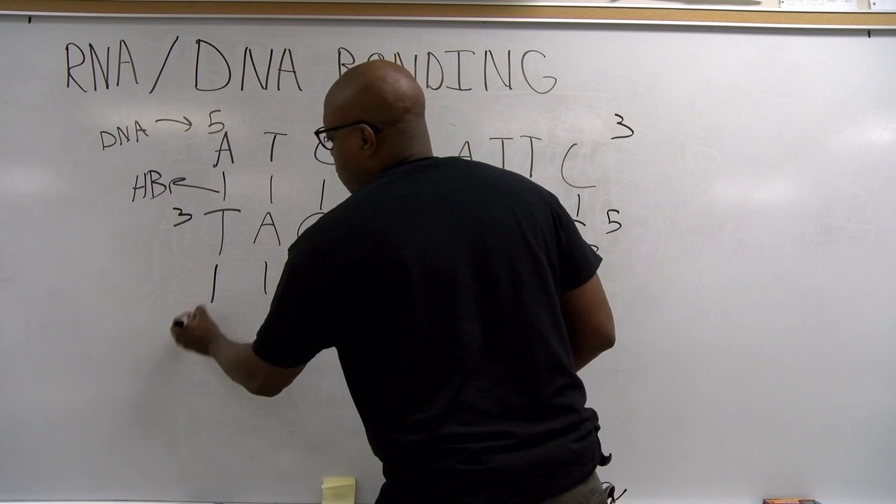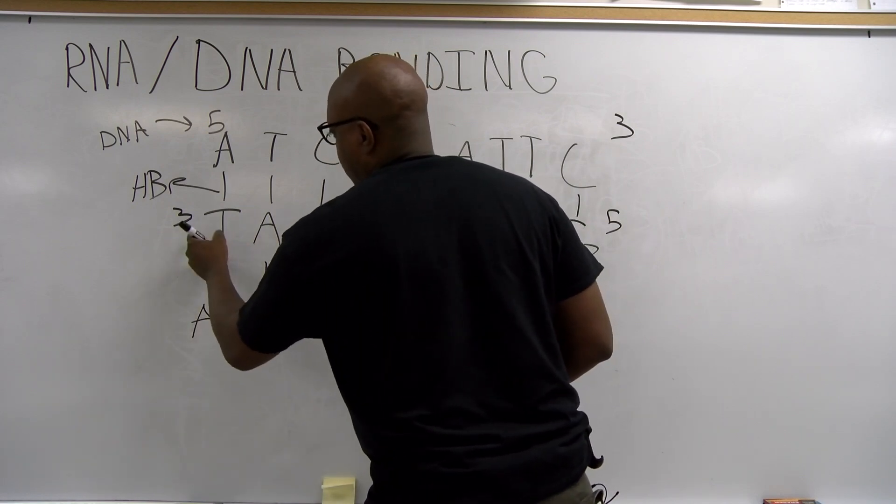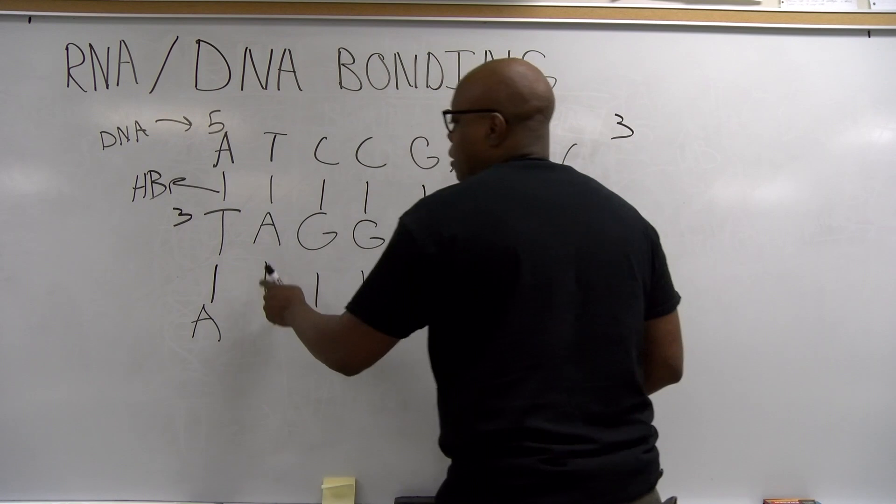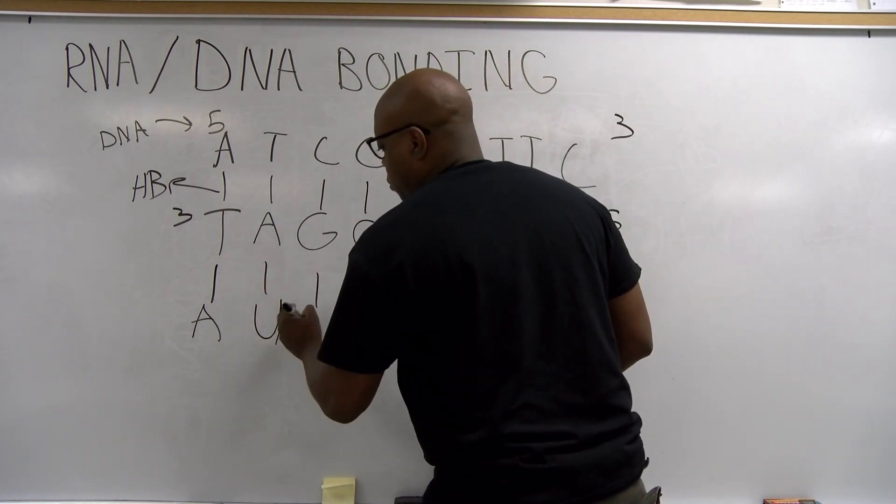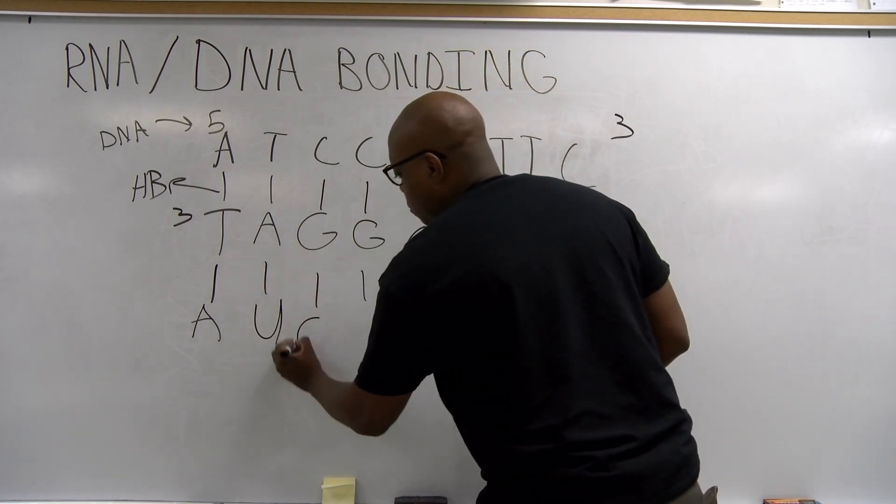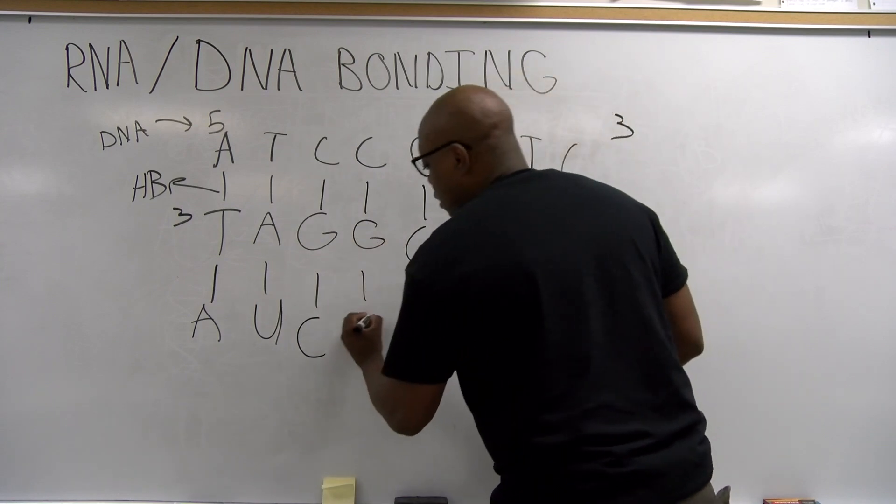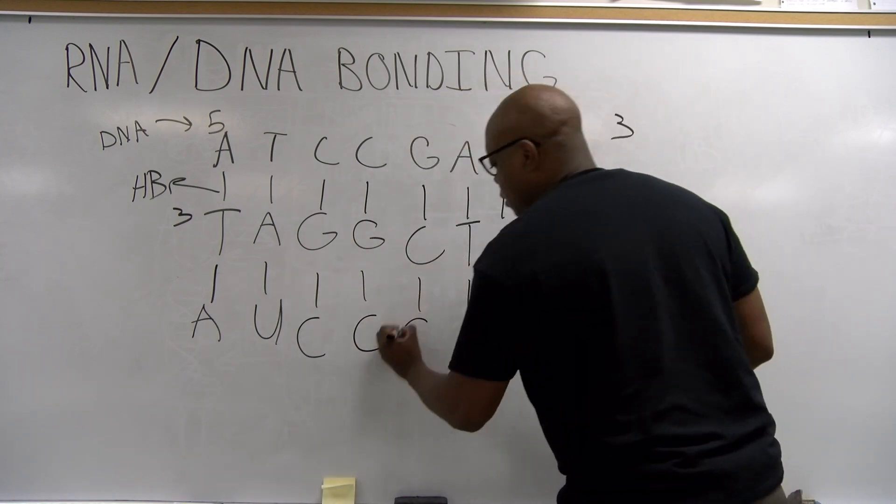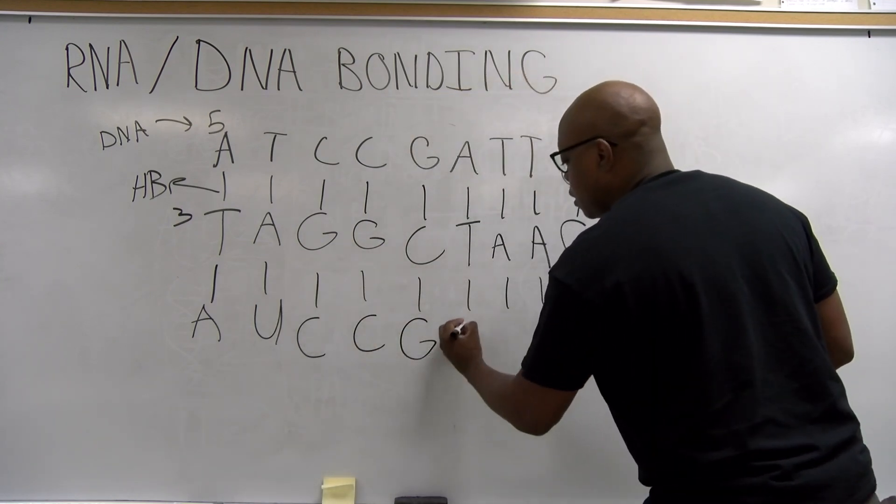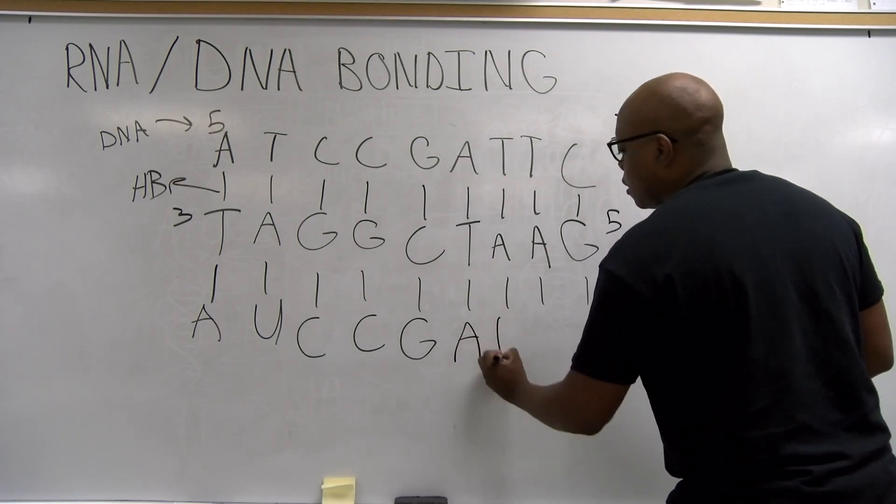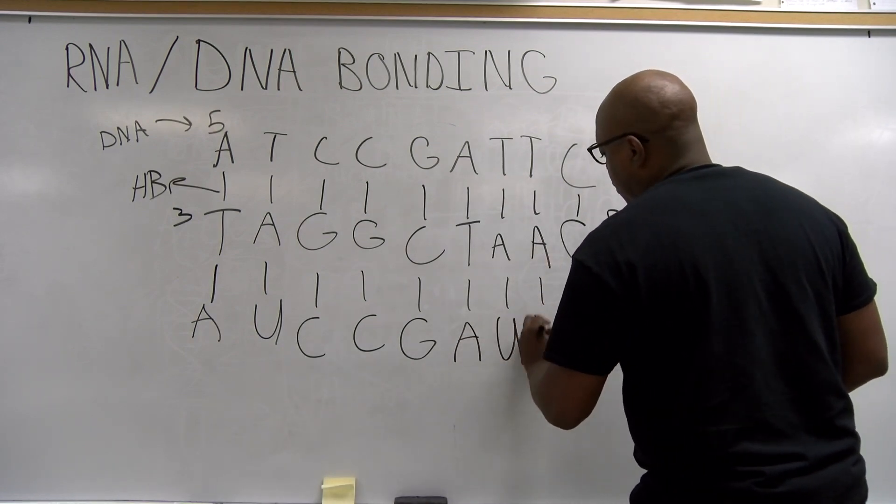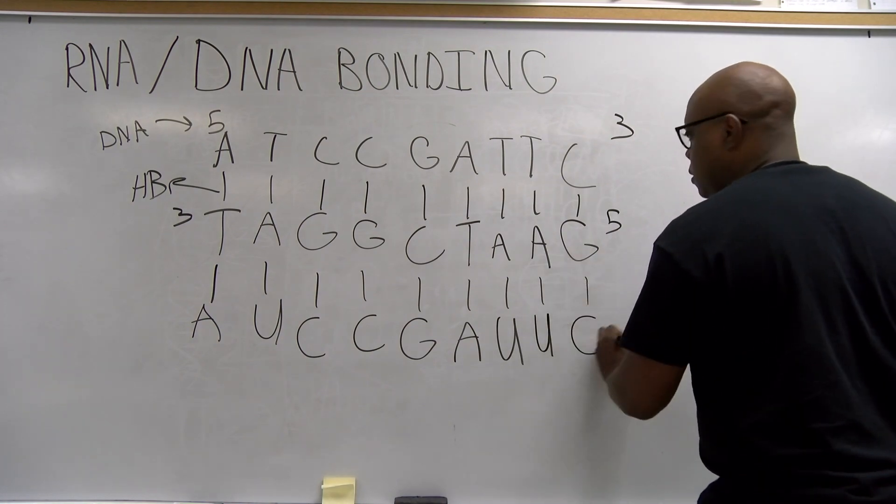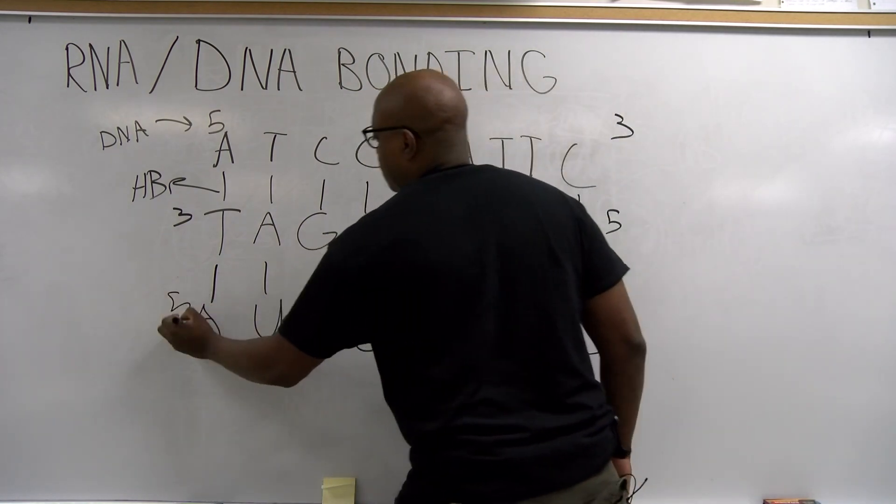Our T still bonds with A because it's in the DNA strand. It's still DNA. This is a new strand. Our A is going to turn into a U, and our G is going to turn into a C, and our G is a C again. Our C is a G. Our T is going to be an A, and our A is going to be a U, and our A is going to be a U, and our G is going to be a C, and then we have 5, 3 again.